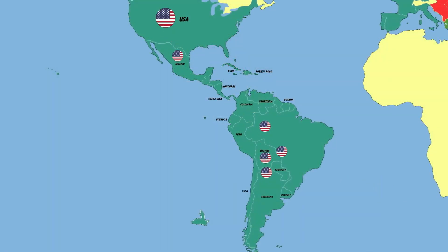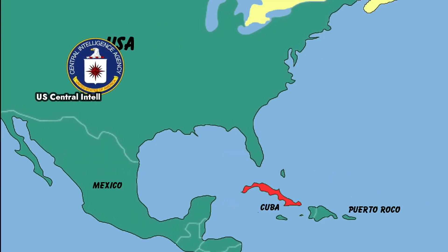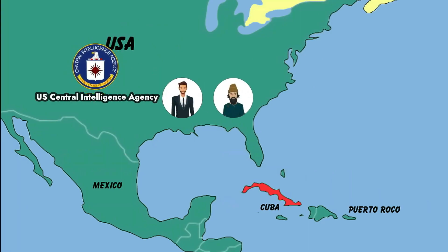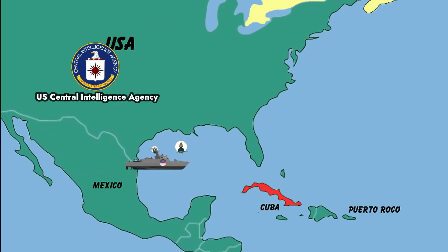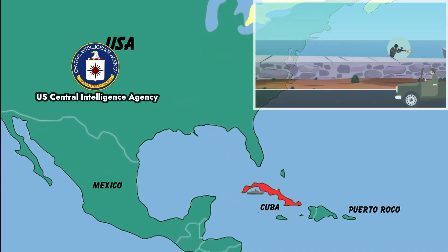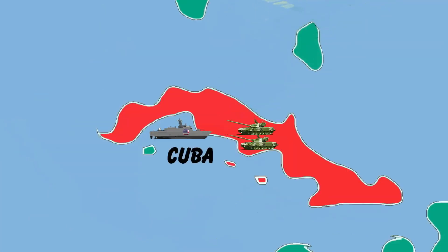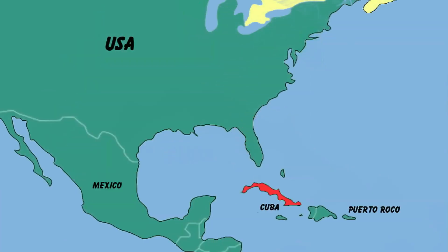In Latin America, the United States established a system to ensure there was no place for communism. However, in 1959, the Cuban Revolution succeeded and a communist government was established. The CIA recruited Cuban exiles with anti-communist ideology to launch an invasion at the Bay of Pigs to overthrow the Cuban government. The CIA also deployed nearly 638 assassination attempts on Cuban leader Fidel Castro, but all were unsuccessful. The Bay of Pigs invasion also failed miserably.